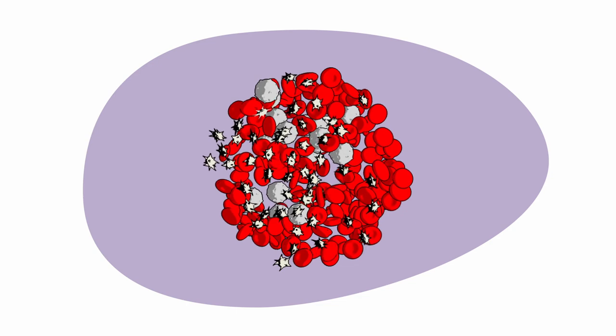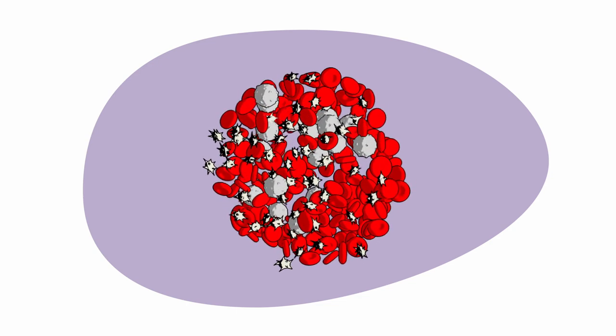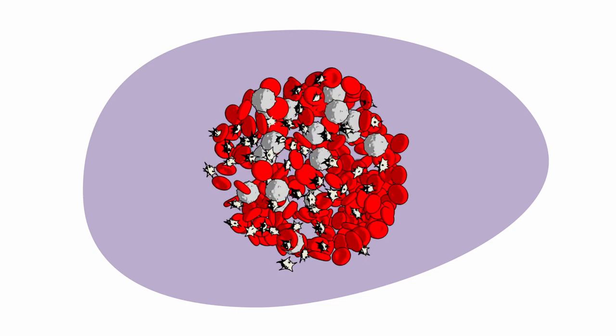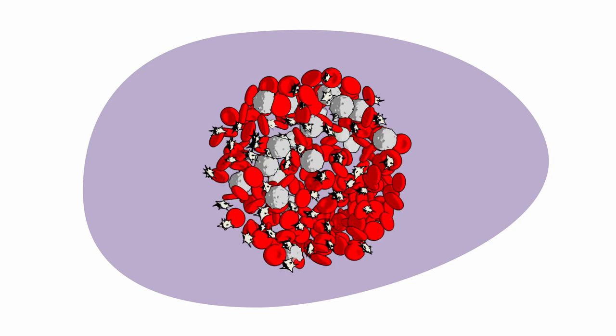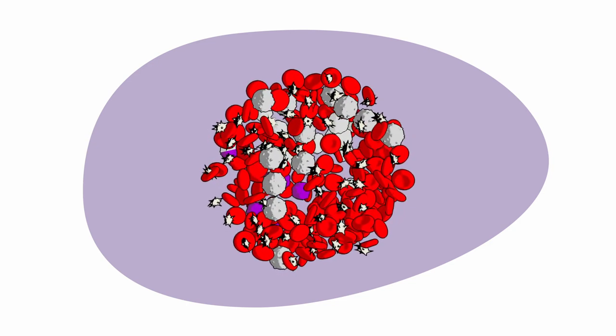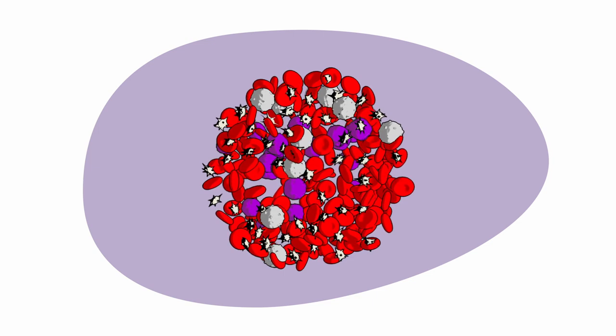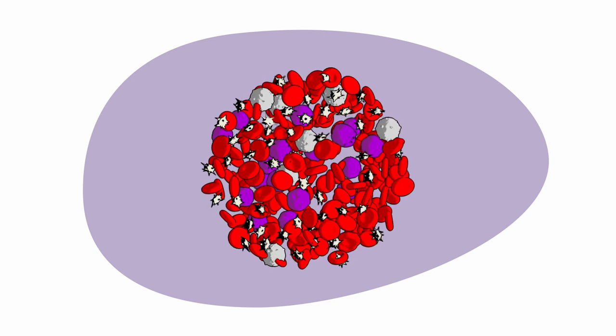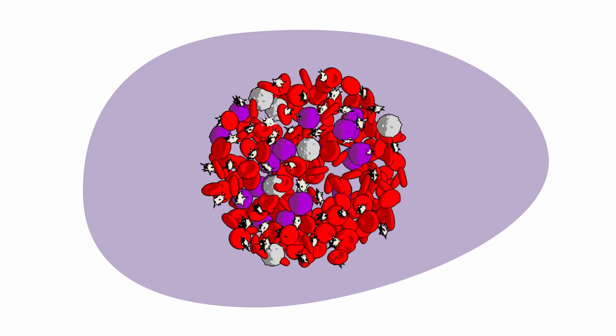With PTCL, a type of white blood cell called lymphocytes undergo changes in the DNA. These cells multiply quickly, upsetting the growth and normal function of healthy cells. Over time, they can spread to other tissues and organs.